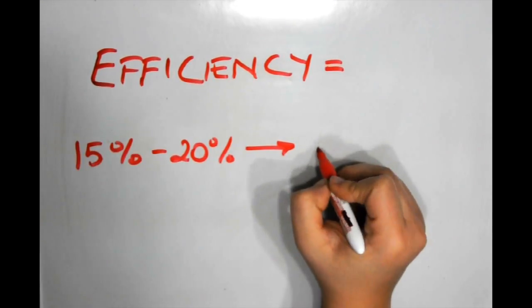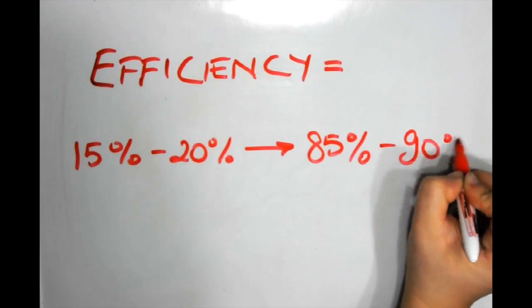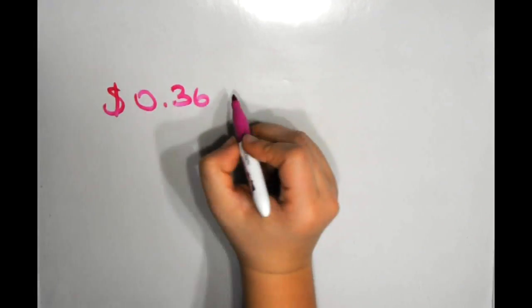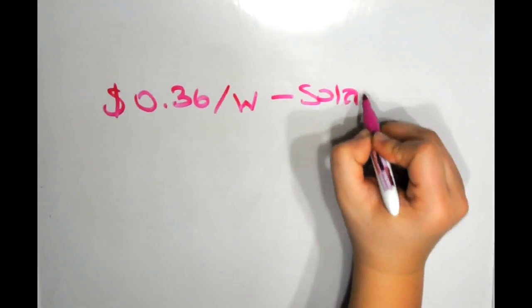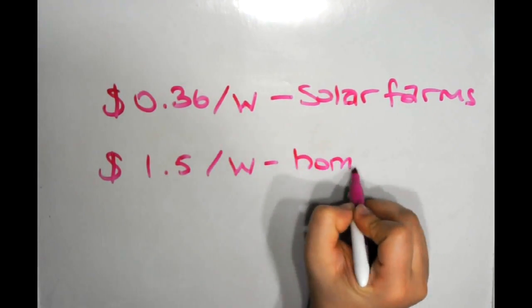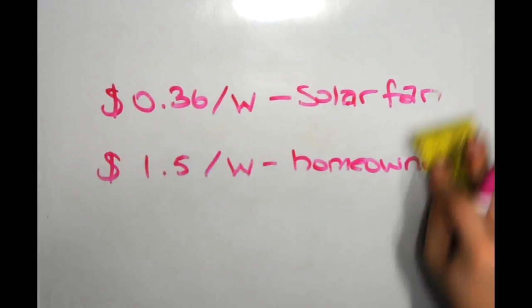With some work, scientists believe that solar panels can reach their theoretical limit, which is 85-90% efficiency. To look at solar panels on an economical aspect, solar panels cost $0.36 per watt for establishing solar farms, which translates to $1.50 per watt for homeowners.